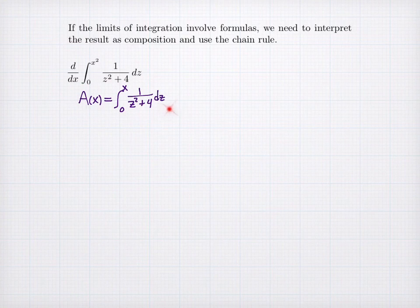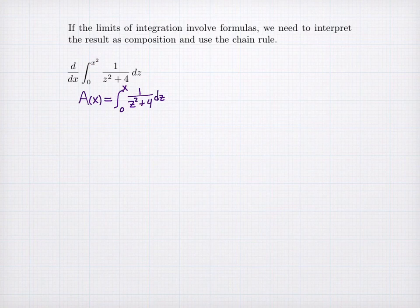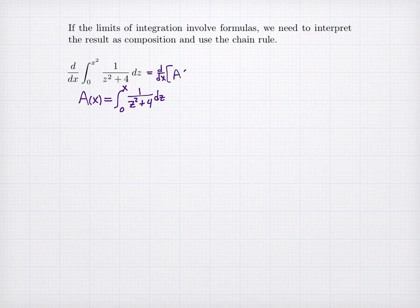We're going to think about this integral in the context of an accumulation function. Here I've written my accumulation function — notice what's the same and what's different. I have the same integrand and the same starting value of 0. But the difference is that my problem had x², and an accumulation function always has to have the input variable. So I can't put x² there to define my accumulation function. By the idea of composition, what we're actually taking the derivative of is the accumulation function evaluated with an input of x².